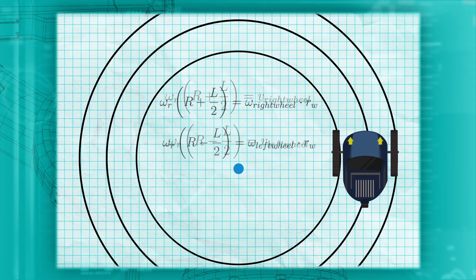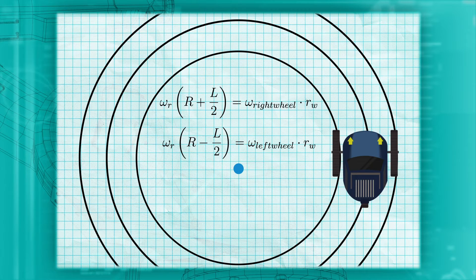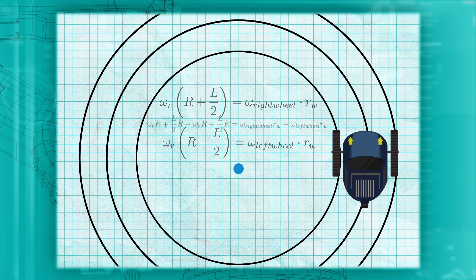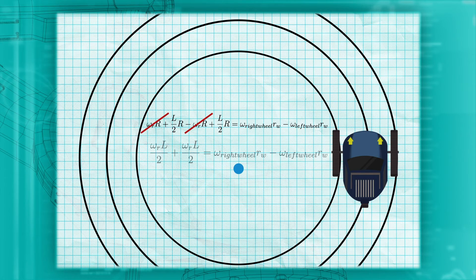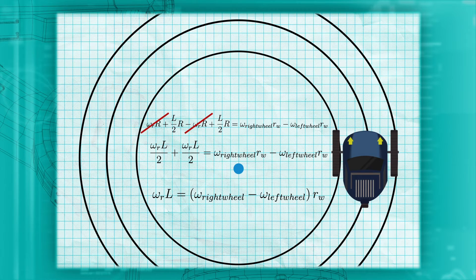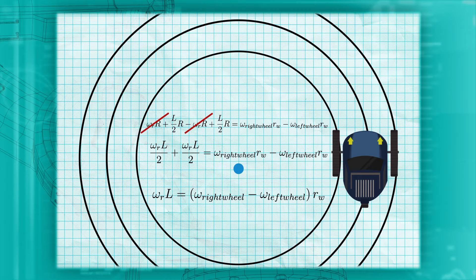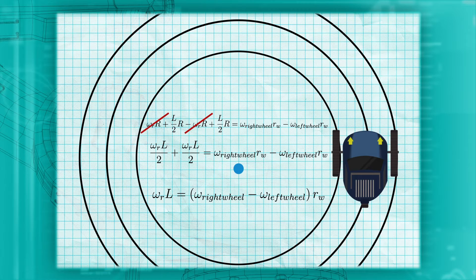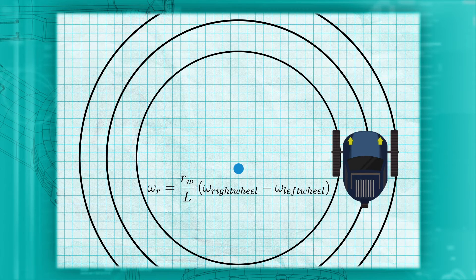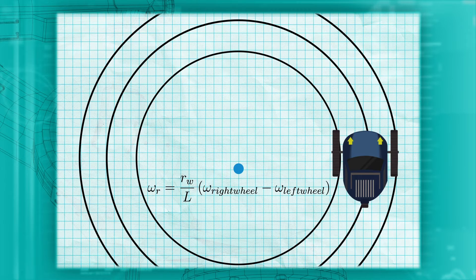Remember, that the velocity of the wheel is the angular velocity of the wheel times the radius of the wheel. Subtracting these two equations from each other, we get the robot's angular velocity times l is equal to the right wheel's angular velocity minus the left wheel's angular velocity times the wheel radius. And now we have an equation telling us what our robot's angular velocity is based on our wheel speeds.